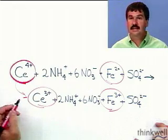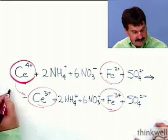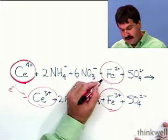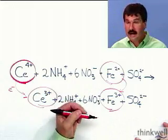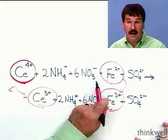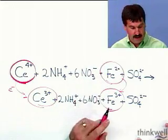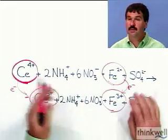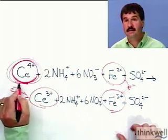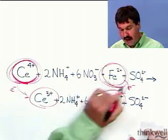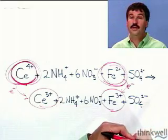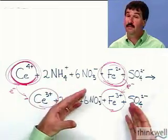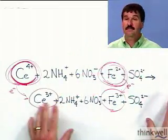The cerium-4 is acting as the oxidant. It's taking an electron, being reduced to give us cerium-3. The iron-2 is acting as the reductant. It is being oxidized to iron-3. The crucial point here is that since only one electron is involved in either of these processes, it takes one cerium-4 to react with one iron-2. So our relationship is one to one. If I know the number of moles of cerium-4, I know the number of moles of iron-2 that I have reacted it with.